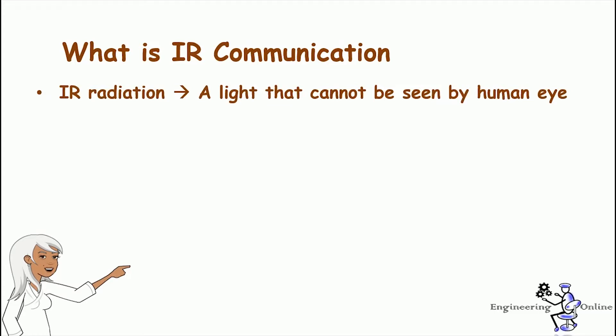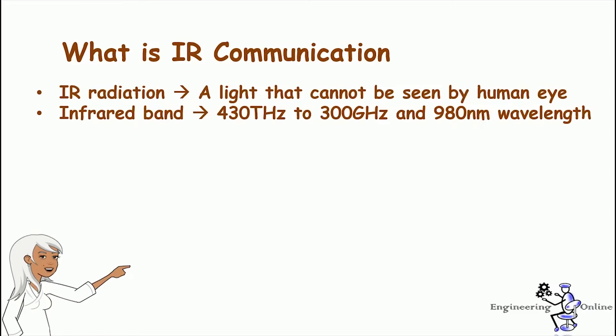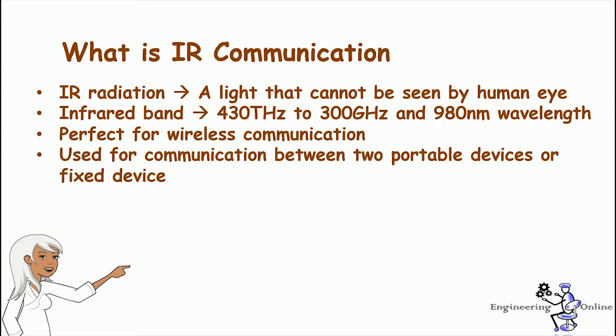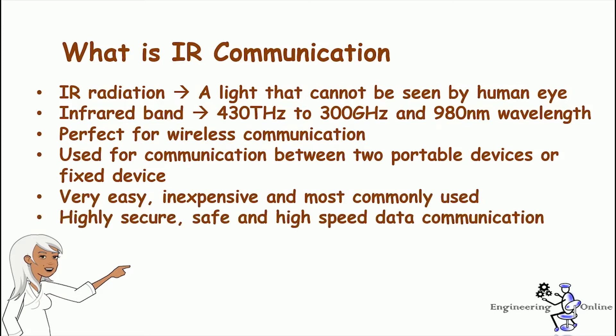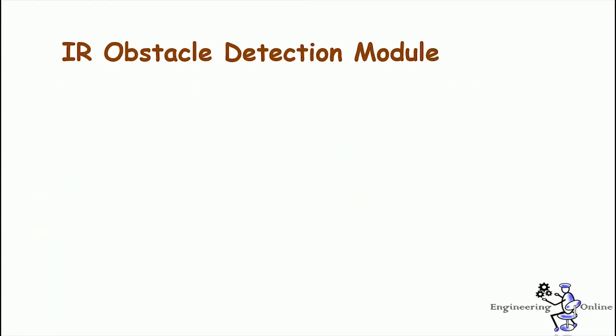IR is infrared radiation and it cannot be seen by the human eye. In the electromagnetic spectrum, the infrared band corresponds to 430 THz to 300 GHz and it has a wavelength of 980 nanometers. The propagation of light waves in this band can be used for a communication system of data. They are perfect for wireless communication — this communication can be between two portable devices or between a portable device and a fixed device. IR communication is quite easy, inexpensive, and most commonly used. It is secure and highly directional, and not harmful for human beings. The data rate of infrared communication is about 1 gigabit per second and it can be used for sending information like video signals.